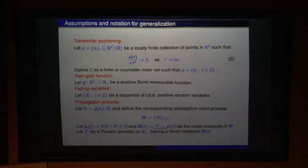So, again, I introduce some more notation. So, again, we have a deterministic point pattern, and we have this index set, calligraphic i. We have fairly general path gain functions. And then we have a sequence of iid positive random variables, denoted by s. And then we define each value, this propagation process value, as yi. And then the collection, the point process, will be denoted by w. And then we denote the distribution of these y's as lowercase pi. And then if you sum up these pi's, you get the mean measure of w. And then we define z to be the Poisson process on the positive real line with the same mean measure. So, what we want is that for w, as we send something to infinity, we want this w to converge to z.